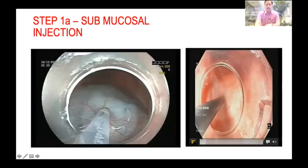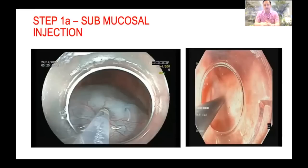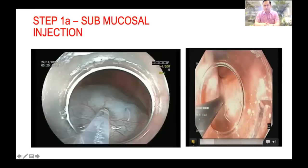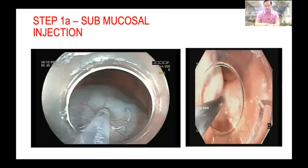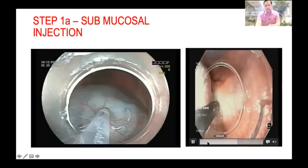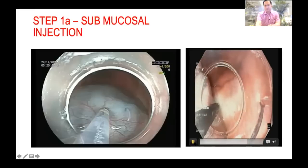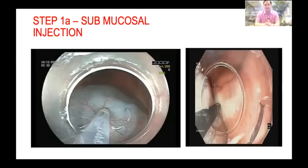If you are not getting a good bleb despite injection, it may be because you are injecting into the muscle or encountering submucosal fibrosis. Here I am injecting at 5 o'clock but the bleb is forming from 6 to 9 o'clock — this is because of focal submucosal fibrosis. Submucosal fibrosis most of the time is not circumferential, so if you cannot do a posterior POEM, you can do an anterior POEM — wherever you get a good bleb, you can perform POEM there.